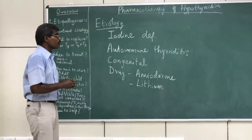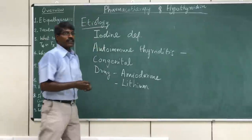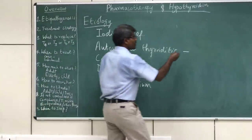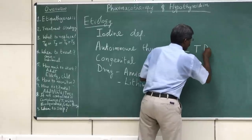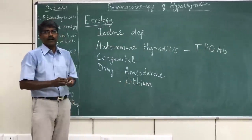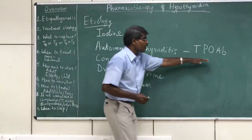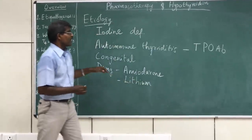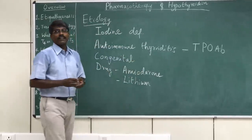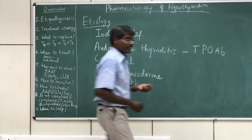Regarding the pathogenesis of autoimmune thyroiditis: many patients have antithyroid peroxidase antibodies. Thyroid peroxidase is an enzyme involved in thyroid hormone synthesis, and antibodies against it serve as one of the markers to identify the cause of hypothyroidism.